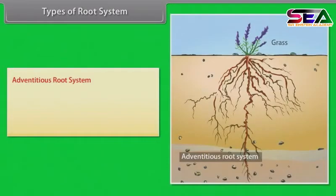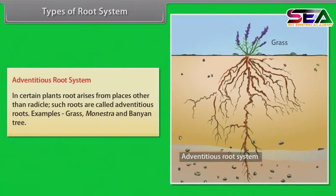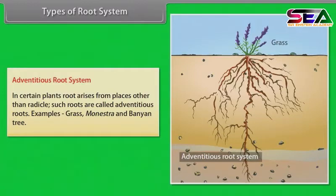Adventitious root system. In certain plants, root arises from places other than the radicle. Such roots are called adventitious roots. Examples: grass, monstera and banyan tree.